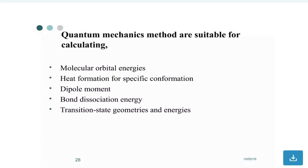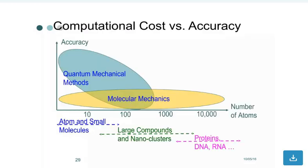Quantum mechanics methods are suitable for calculating molecular orbital energy, heat of formation for a specific conformation, dipole moment, bond dissociation energy, and transition state geometries and energies.